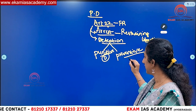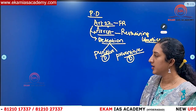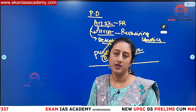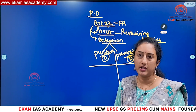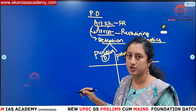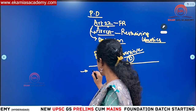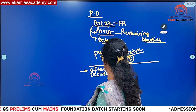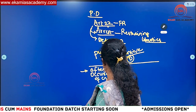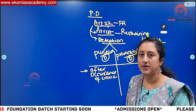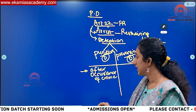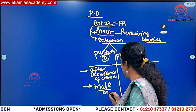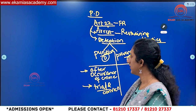First we need to understand what is punitive detention. In both punitive and preventive detention, you are restraining a person from exercising his liberties. In punitive detention, after the occurrence of a crime, the person will be sentenced or detained — that means his detention is based on trial and conviction.